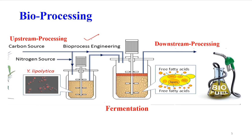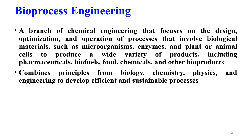Typical bioprocessing can be divided into upstream — starting from your microbial strain, enzymes, or any biological source going through the bioprocess up to fermentation — and downstream, which covers recovery and purification. Bioprocess engineering is a branch of chemical engineering that focuses on the design, optimization and operation of processes involving biological materials such as microorganisms, enzymes, plants and animal cells, to produce a wide variety of products including pharmaceuticals, biofuels, food, chemicals and other bioproducts.